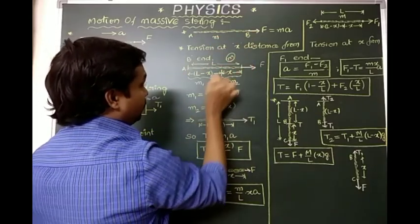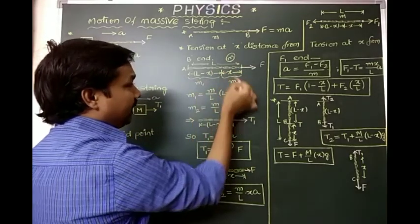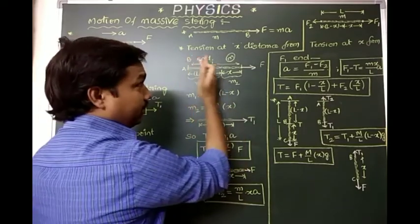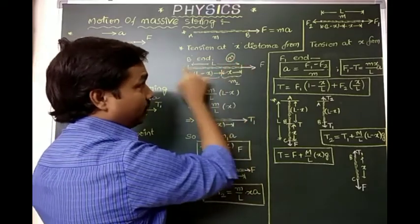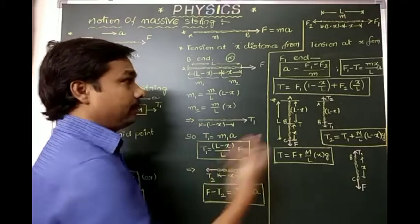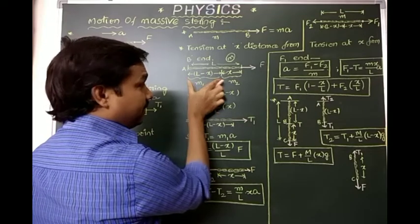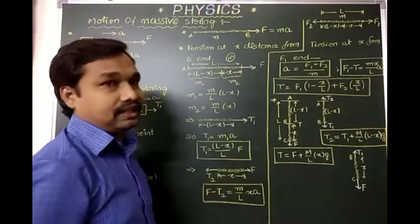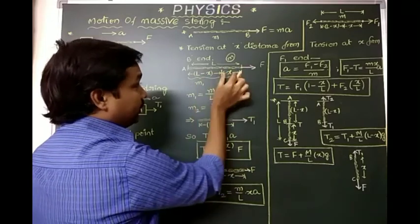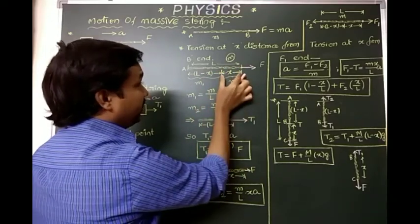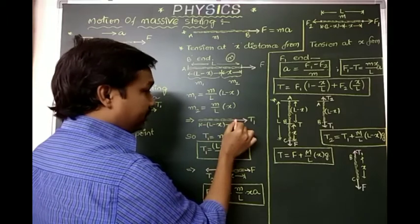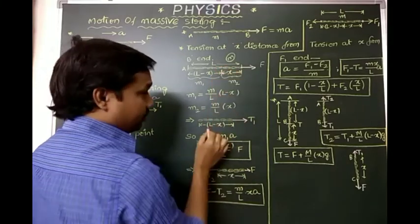We divide the string into two parts, with masses m1 and m2. The total mass is m and total length is l, so the linear mass density is m/l (mass per unit length). The mass of the first part m1 equals (m/l) times (l minus x), and the mass of the second part m2 equals (m/l) times x.